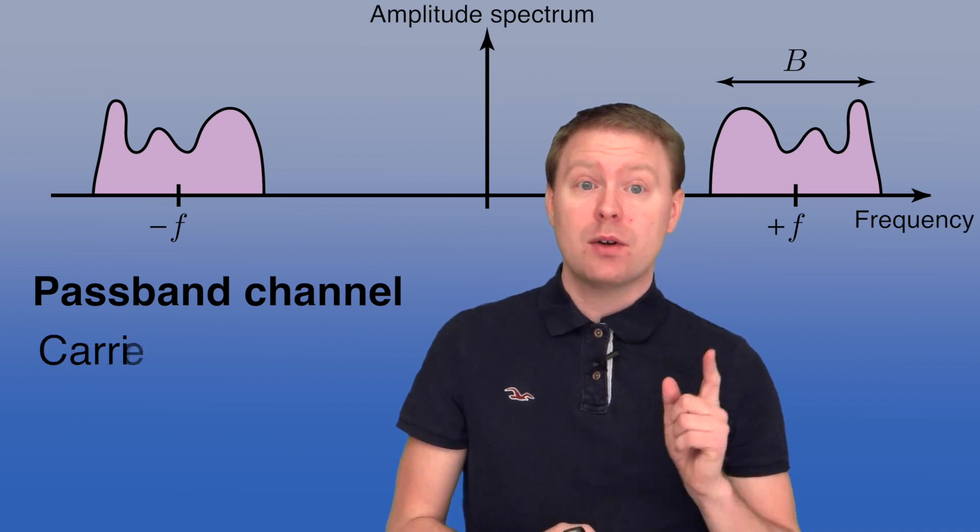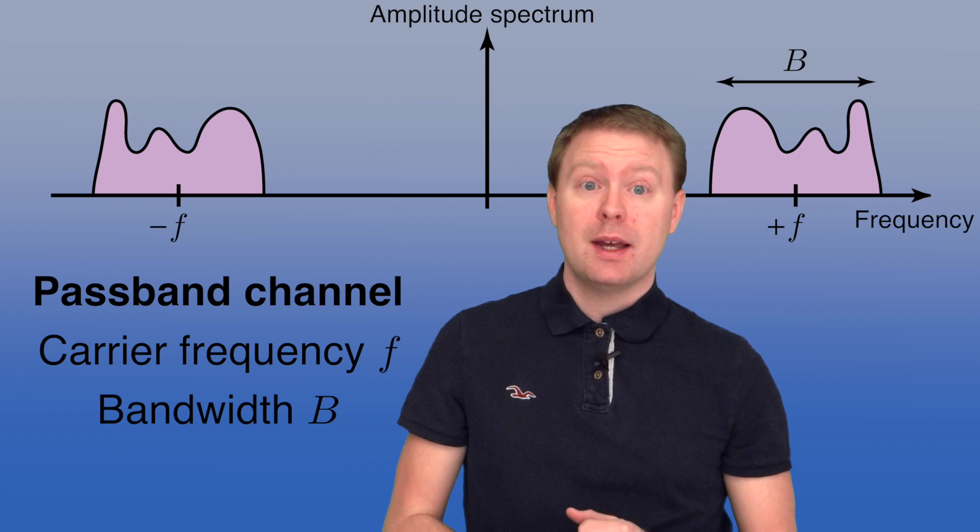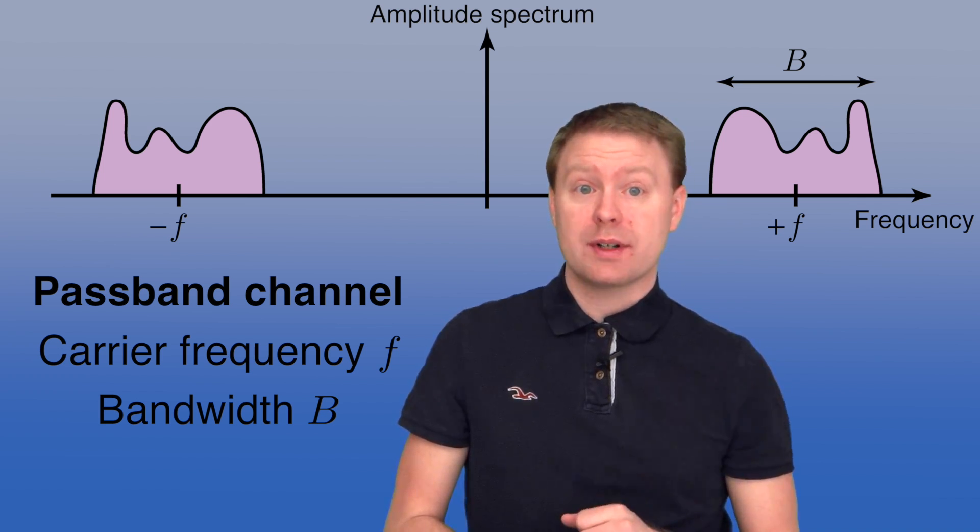In this video I will talk about the basic channel capacity behaviors and the channel that is of interest to us is the so-called passband channel. So we have a carrier frequency f and we have a bandwidth centered around that one called B, and the bandwidth is much smaller than the carrier frequency.